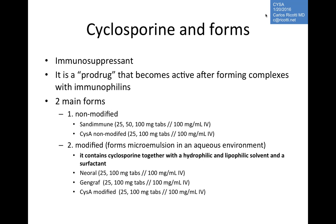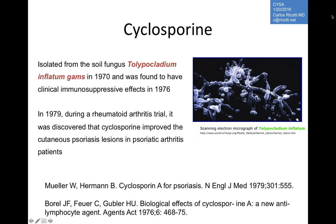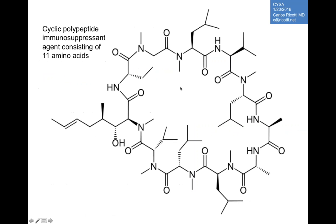The modified version, which we tend to use more often, has higher bioavailability. The dosing is essentially one-to-one, about a 10% difference — 1 to 1.1 — and the modified version is absorbed more consistently. Cyclosporine was initially isolated from a fungus, hoping it would be an antibiotic, but it was found to have immunosuppressive effects in 1976. Further studies in rheumatoid arthritis and psoriasis found that patients with psoriatic arthritis who were receiving the drug had their lesions resolved, which was discovered back in 1979.